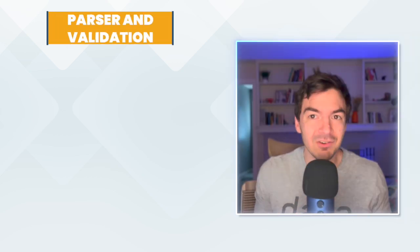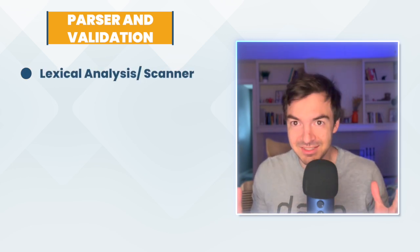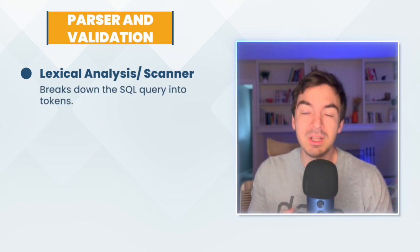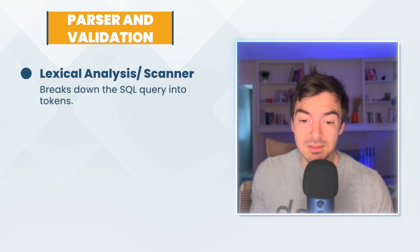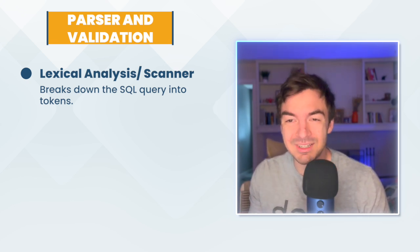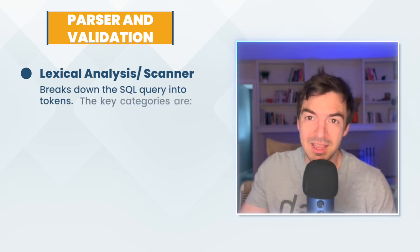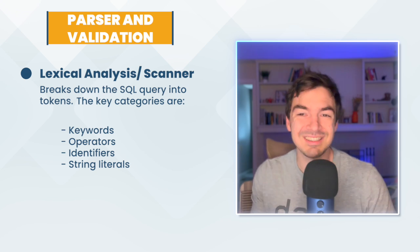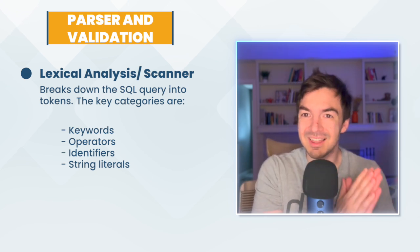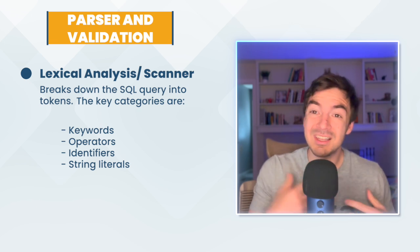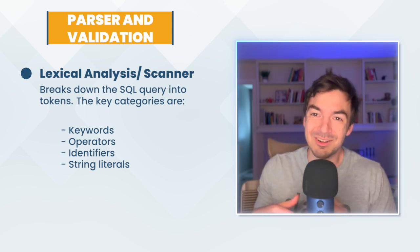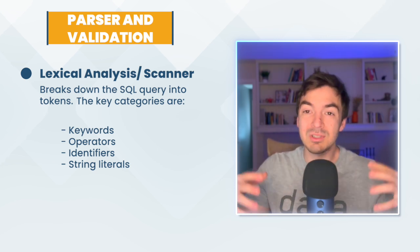Let's start with the parser and validation. When you send your SQL query, the very first step in all these systems is some form of lexical analysis — some database systems call it a lexical scanner. It essentially breaks down your SQL query into a series of tokens, the smallest units it can break it into, generally in a few key categories: keywords, operators, identifiers, and string literals. Keywords would be things like SELECT, FROM, WHERE — that's why you get keyword issues if you accidentally use them the wrong way. Identifiers are things like tables, objects, and columns. Operators are your equal sign and so on, and it breaks everything out into some sort of tree.